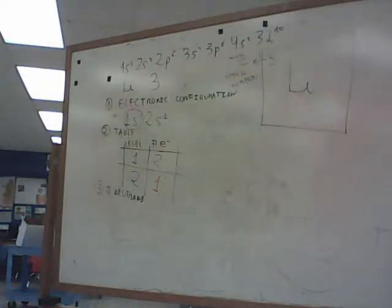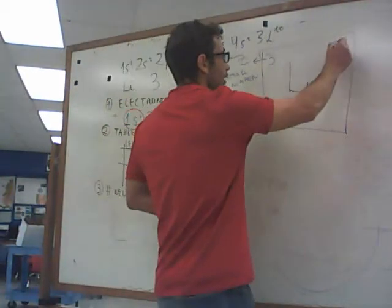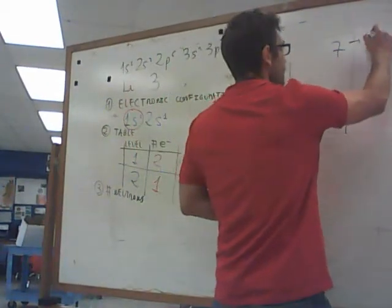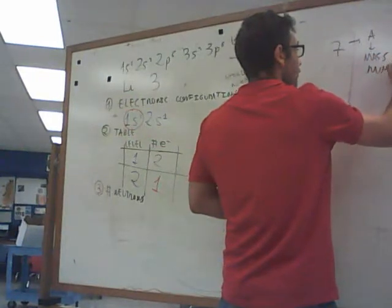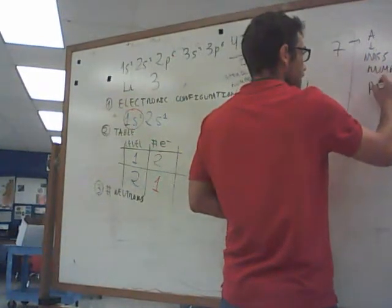See? The atomic number, Z. And the other number, where is it? In this one, I gave you the other day, you got, ah, 7. Round it in. 7. This is A, the mass number.